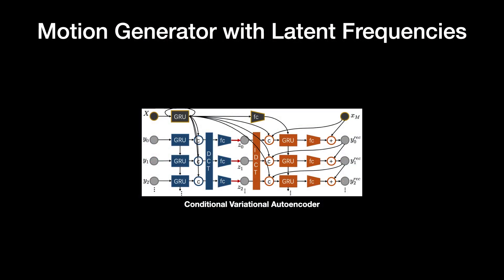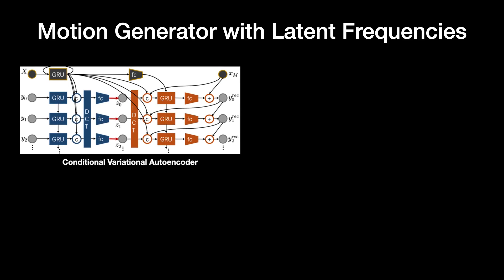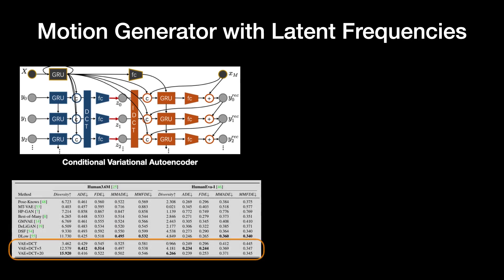Our motion generator is a conditional variational autoencoder. Compared to previous methods, our model encoder preserves full temporal resolution and decomposes the motion into different latent frequency bands via a discrete cosine transform, or DCT. For body joint prediction, we show that our model with the latent DCT space outperforms the state-of-the-art.